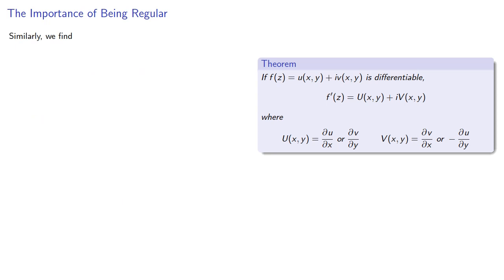By essentially the same argument, we can show that the derivative of u with respect to y is the negative of the derivative of v with respect to x.